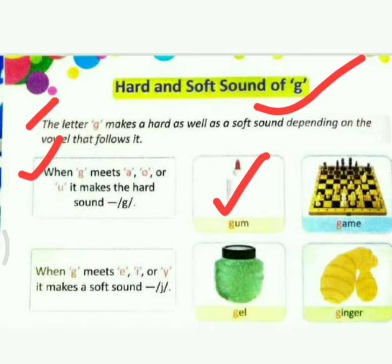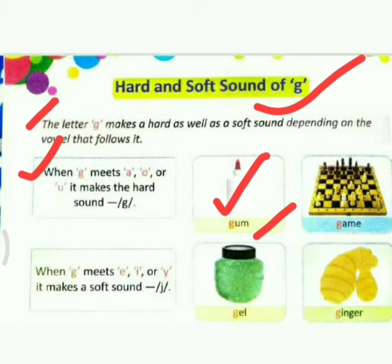Some examples are here. The first example is gum — G-U-M. The first letter is G, and the following vowel is U. Just like I told you, vowels A, O, U make a hard sound. So how do we read it? G-U-M — gum.